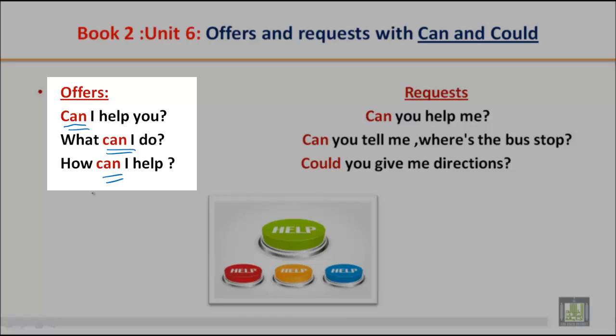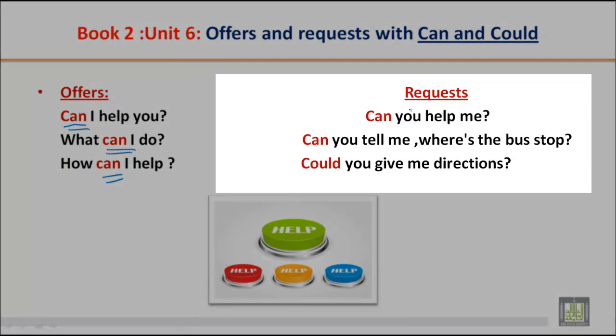Each phrase has a different meaning. 'Can I help you?' means you are offering help. In another way you can say: 'What can I do for you?' or 'How can I help you?' For requests — when you need help — you say: 'Can you help me?' or 'Can you tell me where the bus stop is?'